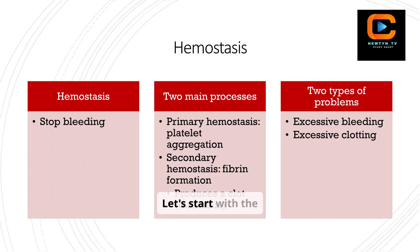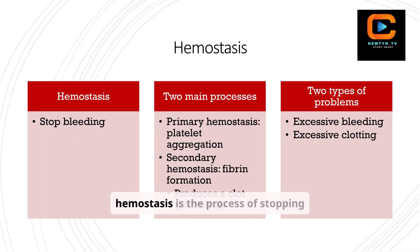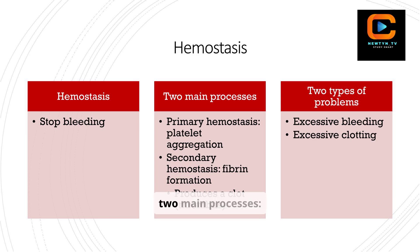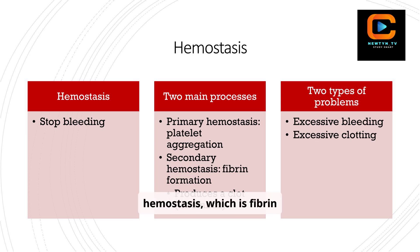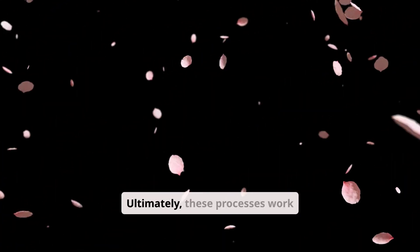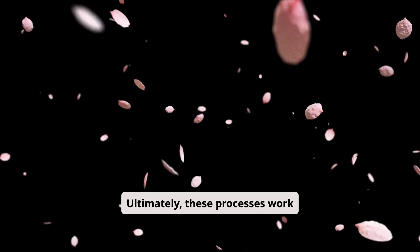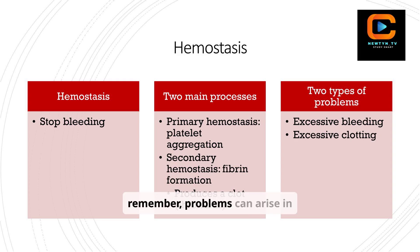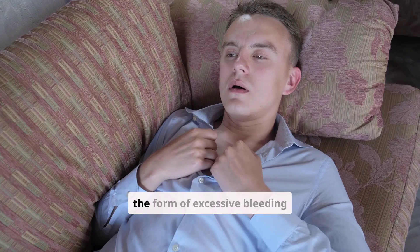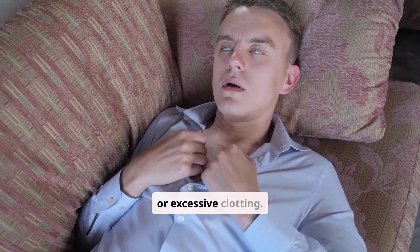Let's start with the basics: hemostasis. Simply put, hemostasis is the process of stopping bleeding. This involves two main processes: primary hemostasis, which is platelet aggregation, and secondary hemostasis, which is fibrin formation. Ultimately, these processes work together to produce a clot or thrombus. But remember, problems can arise in the form of excessive bleeding or excessive clotting.